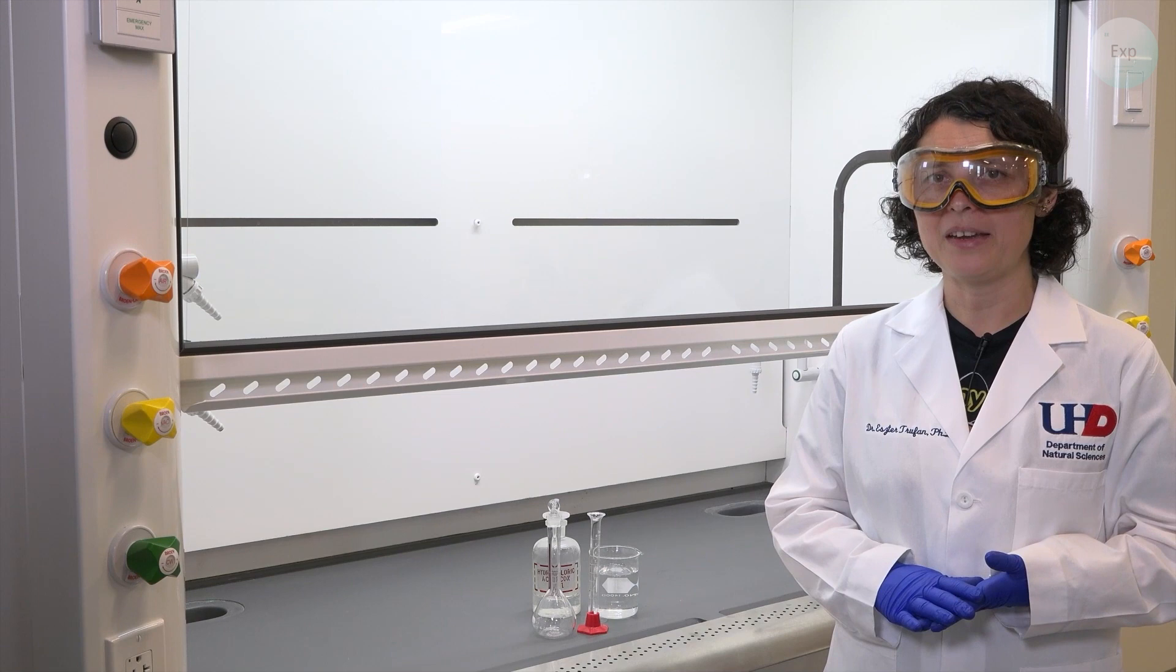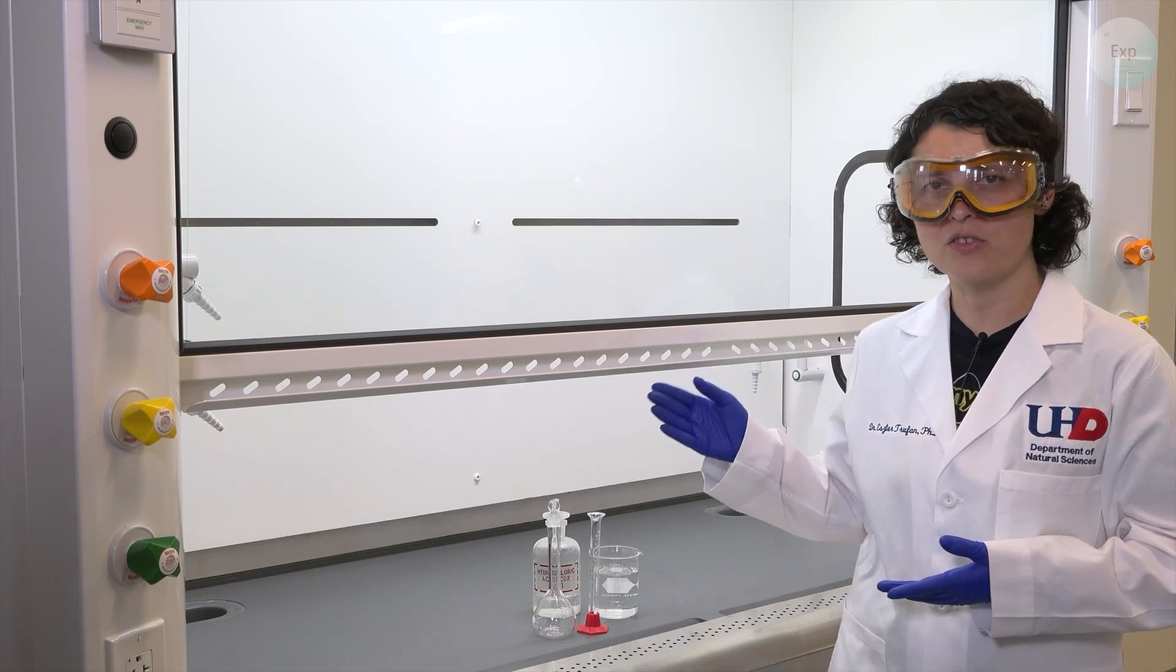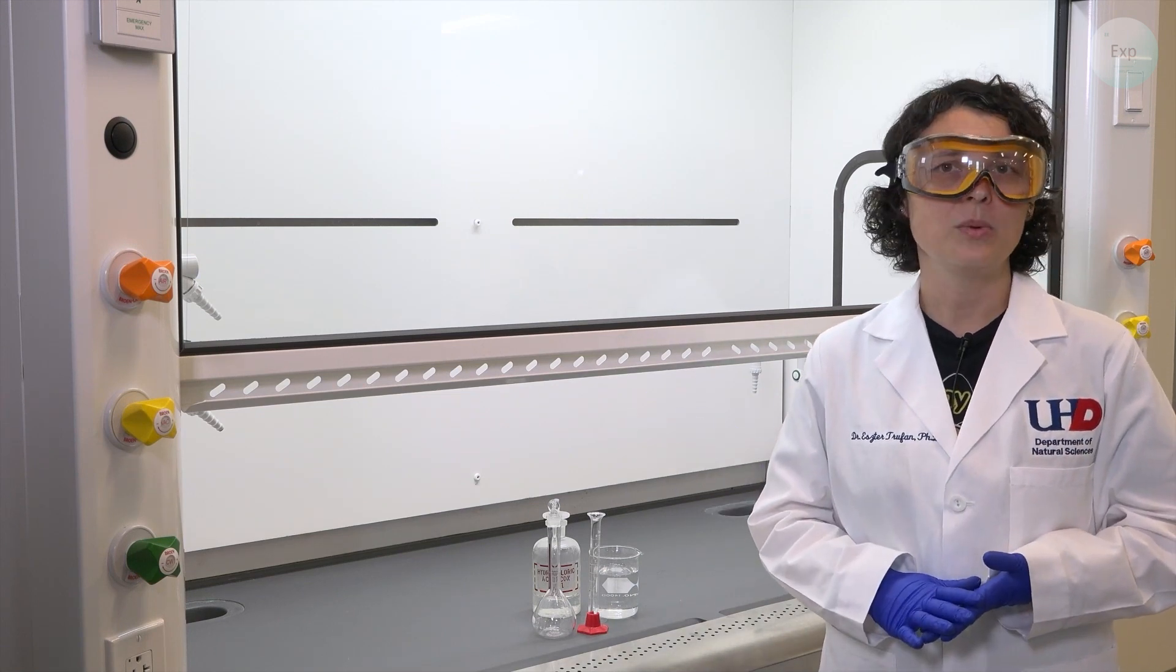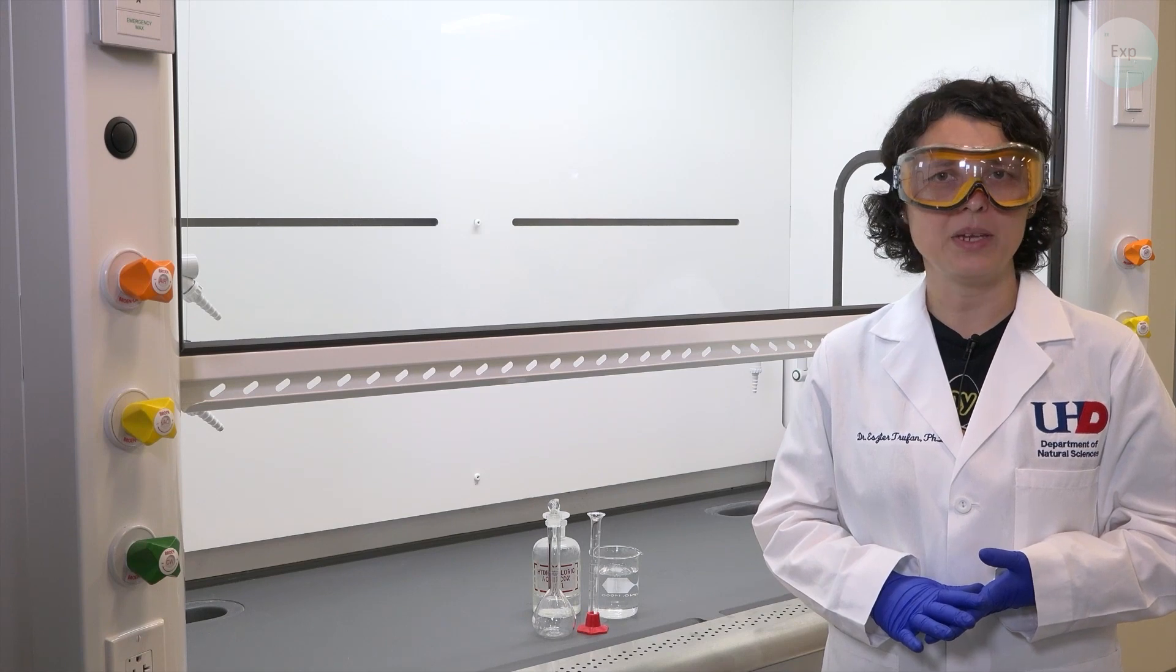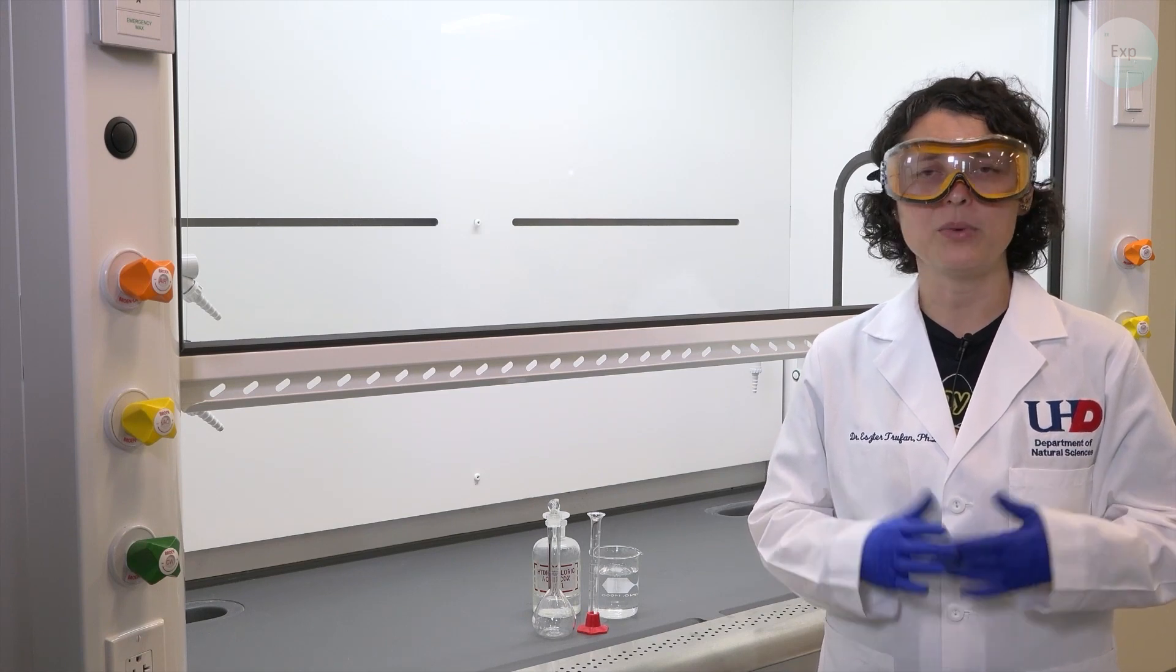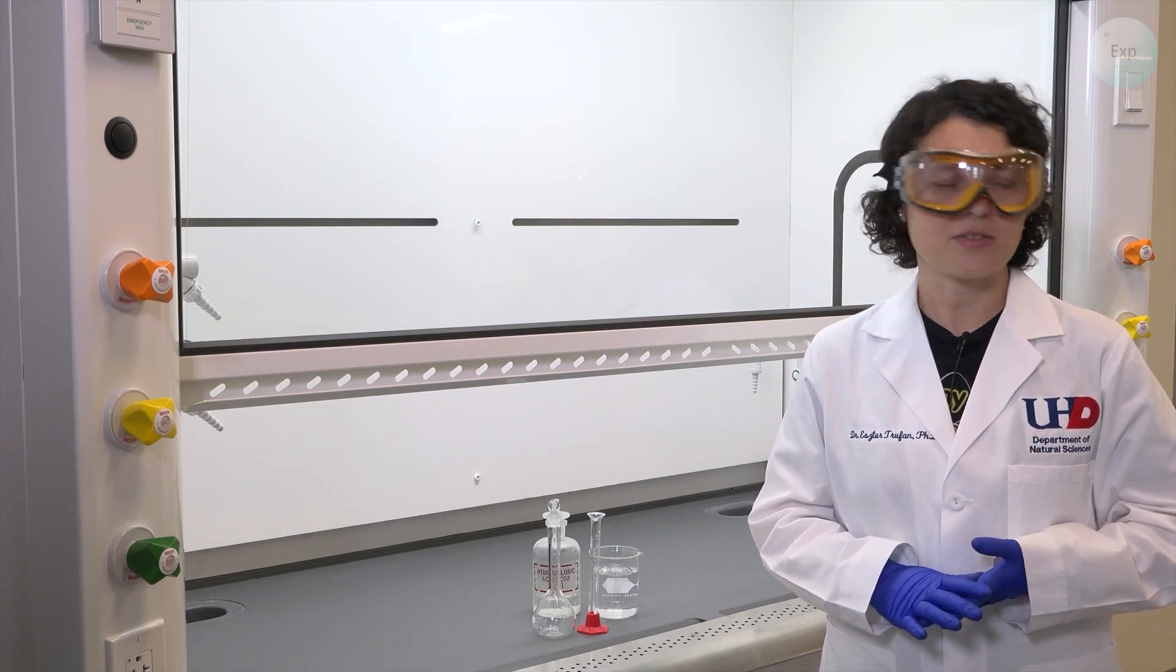And because we will be pipetting material out of our concentrated hydrochloric acid container, we will need to first transfer it into a beaker and then using a pipette with a bulb we will need to make the transfers.